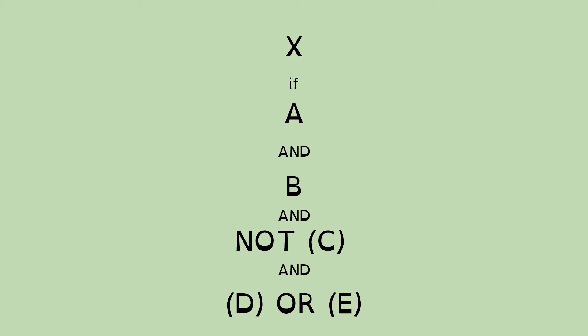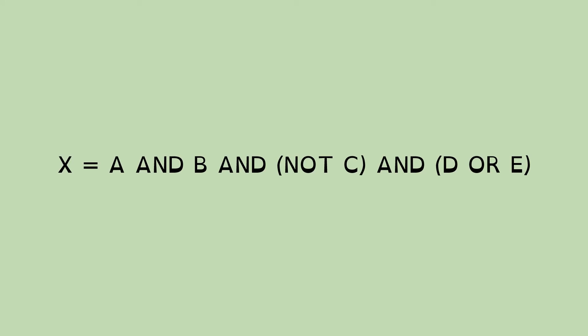Now we're going to move these around and put them all onto one line to make it easier to look at. So I haven't done anything. I haven't actually changed any of the content here. We've just got X equals A and B and not C. And I've put brackets around slightly differently there and D or E. And the brackets are used to give you a context of what ideas go together. So we're about halfway there. We've replaced our statements with letters.